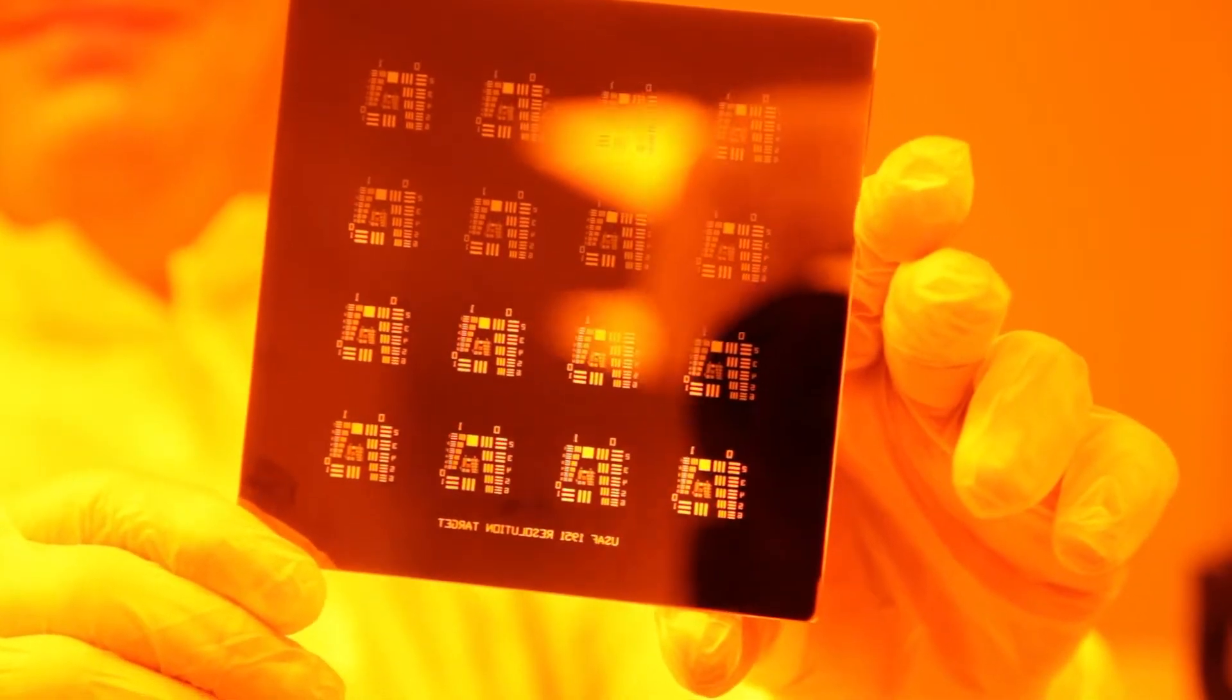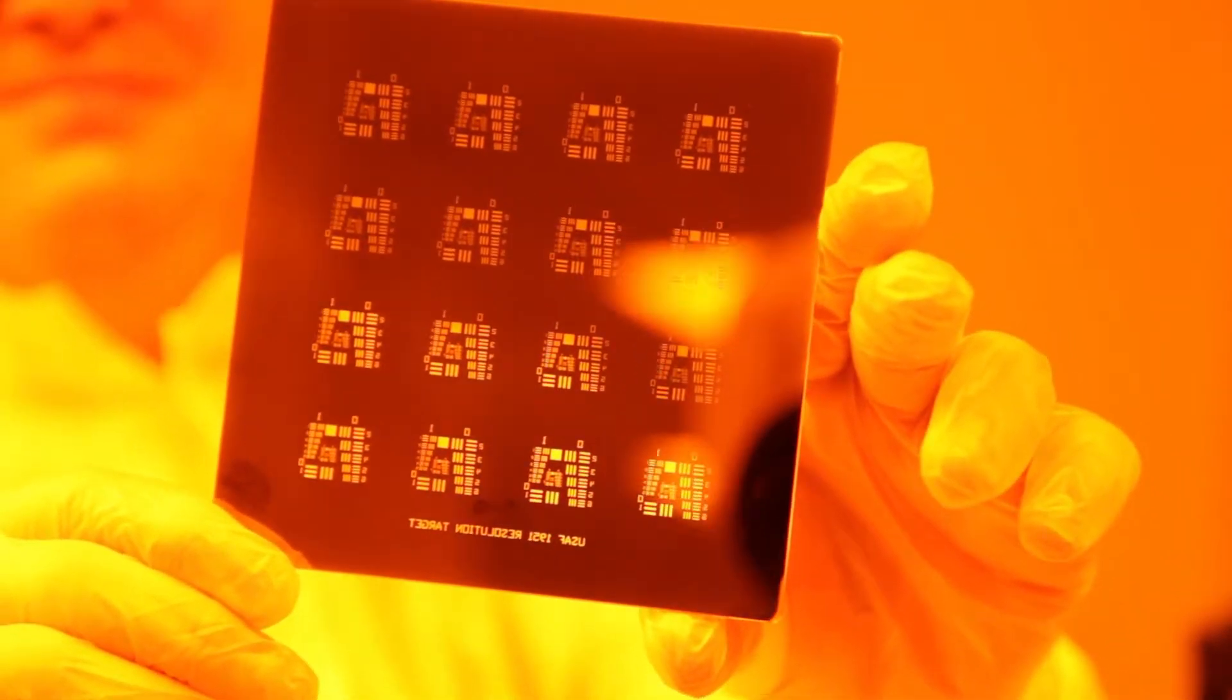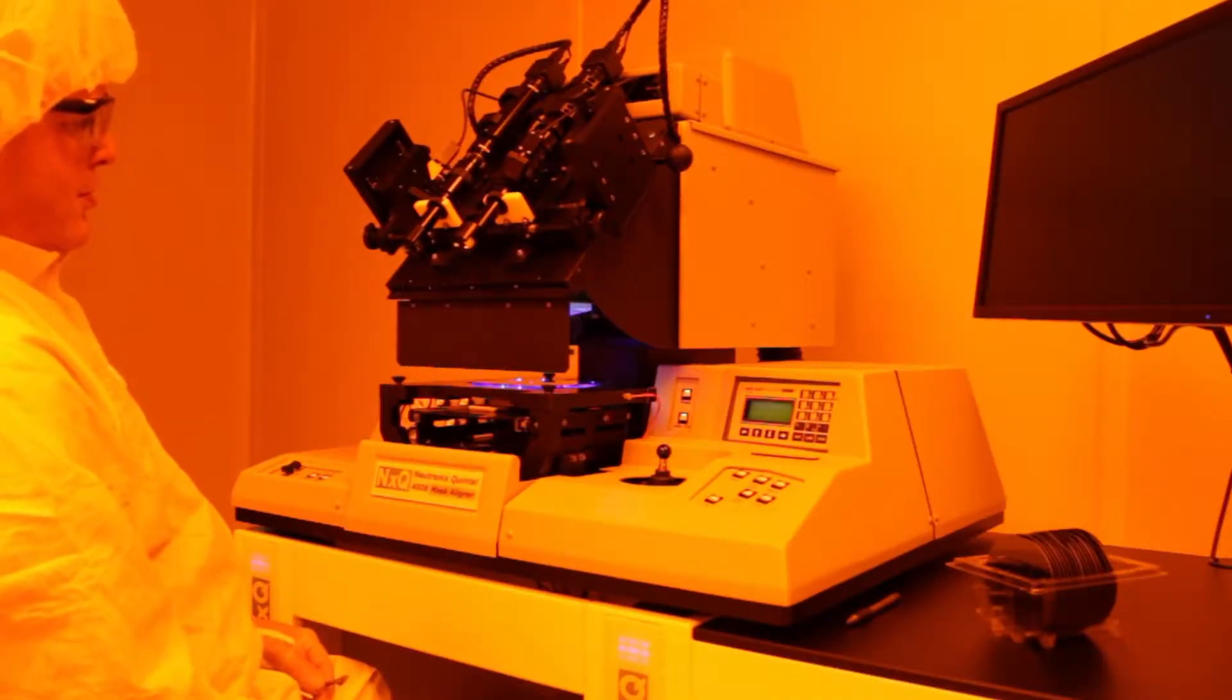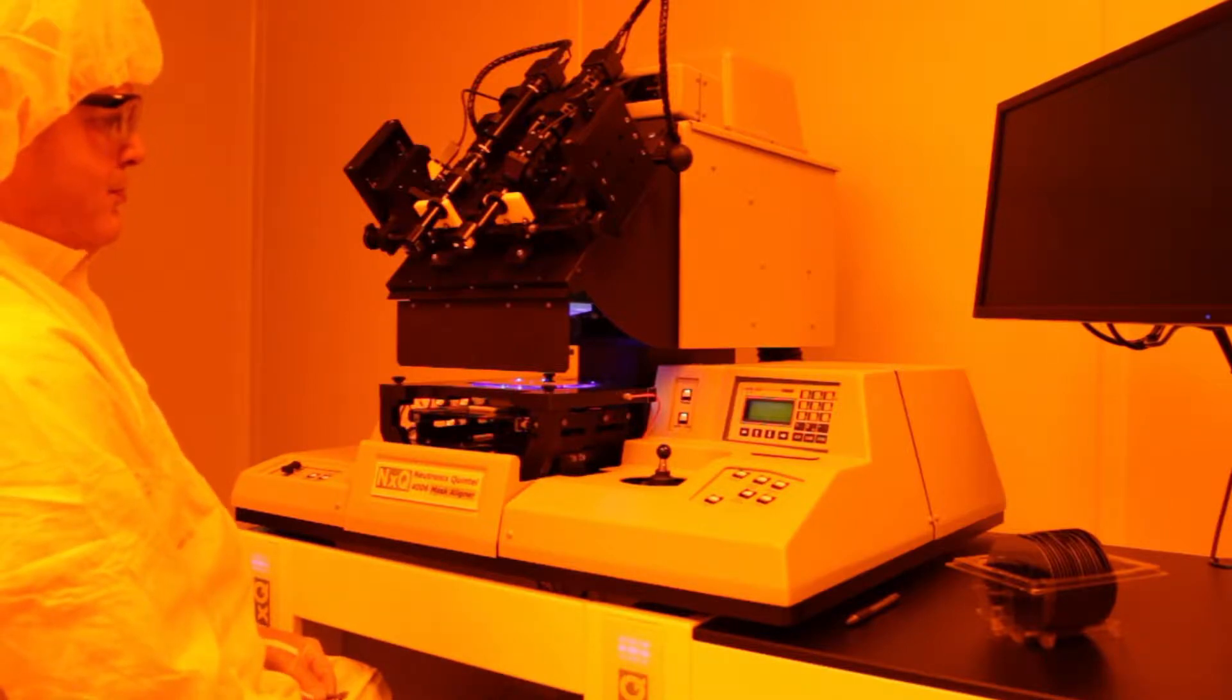A mask, like this one, has a pattern on it. This is the design you want to put in your thin layer. Light shines through it, but only exposes photoresist where the mask is transparent.